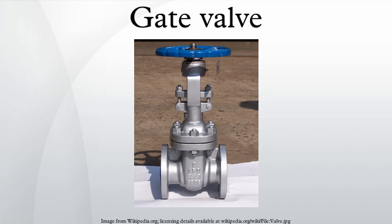For extremely thick fluids, a specialty valve often known as a knife valve is used to cut through the liquid. On opening the gate valve, the flow path is enlarged in a highly non-linear manner with respect to percent of opening. This means that flow rate does not change evenly with stem travel.